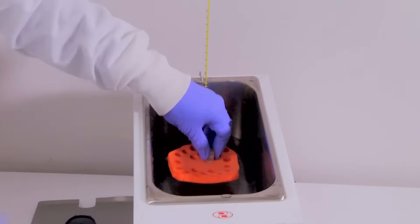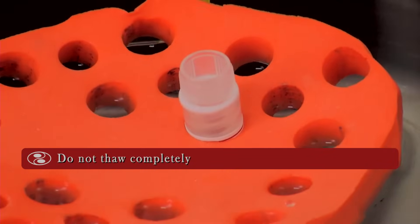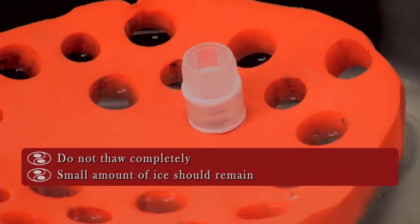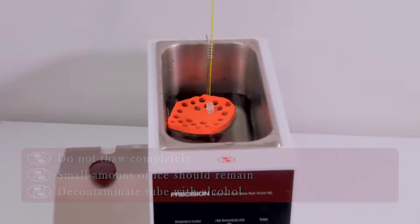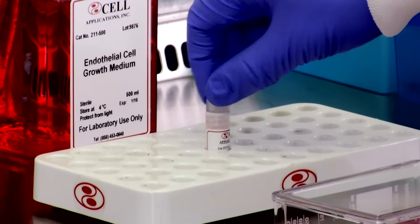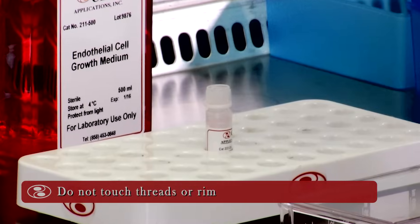Submerge lower half of vial in bath. Do not thaw completely. Small amount of ice should remain. Decontaminate tube with alcohol. Remove cryovial cap. Do not touch threads or rim.